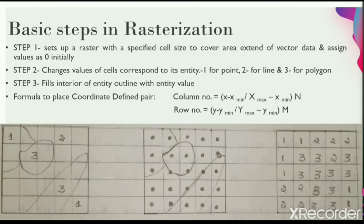The second step changes the value of those cells that correspond to point, line, or polygon boundaries, as depicted in the bottom left corner of the image. Generally, a cell value is set to 1 for a point, 2 for a line, and 3 for a polygon feature.